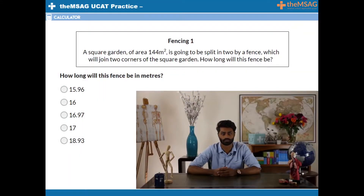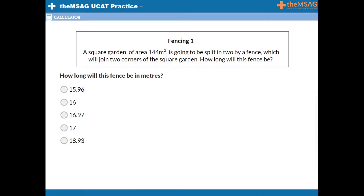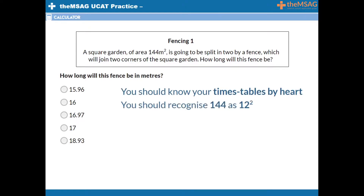Question 1. A square garden of area 144m² is going to be split in two by a fence, which will join the two corners of the square garden. How long will this fence be in metres? First, we need to calculate the length of the garden to find the short sides of our triangle. You should know your times tables by heart, meaning you should recognise 144 as 12 squared.